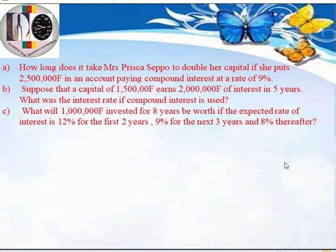The A part asks: how long does it take Mrs. Prisca-Sippo to double her capital if she puts 2,500,000 francs in an account paying compound interest at a rate of 9%? The B part says: suppose that a capital of 1,500,000 earns 2,000,000 francs of interest in 5 years — what was the interest rate if compound interest is used? And the C part asks: what will 1,000,000 francs invested for 8 years be worth if the expected rate is 12% for the first 2 years, 9% for the next 3 years, and 8% thereafter?